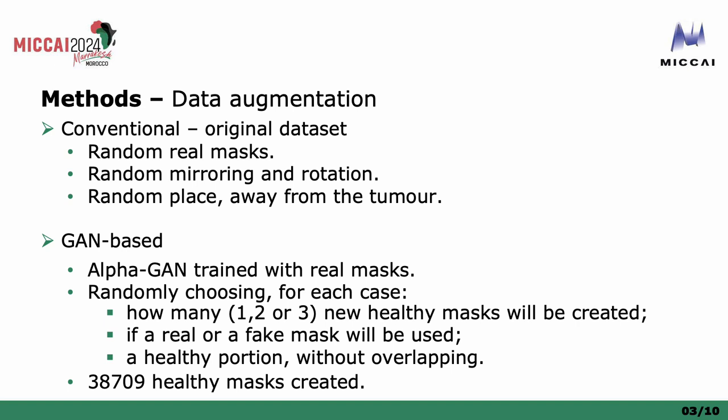In order to make the task more challenging for the diffusion model, we use a GAN to generate synthetic healthy masks. Then, randomly, we choose how many healthy masks we want per brain, and a random real or fake mask is used.